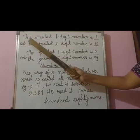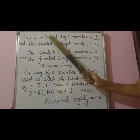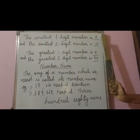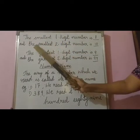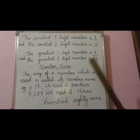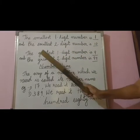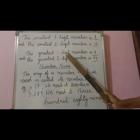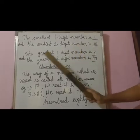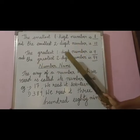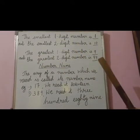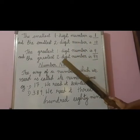Now see this — the smallest one digit number is 1 and the smallest two digit number is 10. Likewise, the greatest one digit number is 9 and the greatest two digit number is 99.